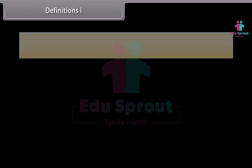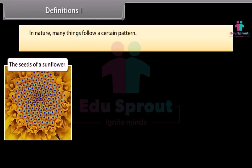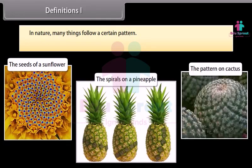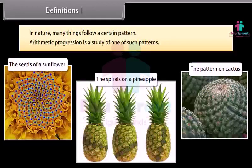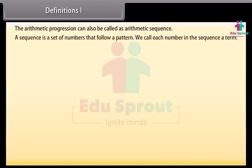In nature, many things follow a certain pattern, such as the seeds of a sunflower, the spirals on a pineapple, the pattern on cactus and so on. Arithmetic progression is a study of one of such patterns. The arithmetic progression can also be called as arithmetic sequence. Before talking about arithmetic sequence, let us know what a sequence is. A sequence is a set of numbers that follow a pattern.